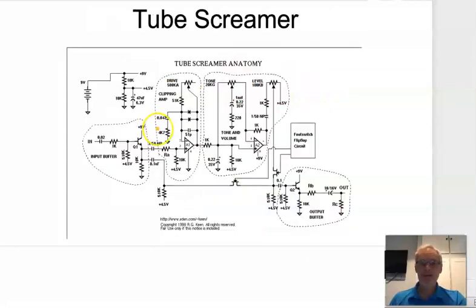This is the tube screamer arrangement. This here is the back-to-back diode arrangement, so this will help clamp this output signal at a particular level. As we change the gain of the amplifier here, we either bring in this circuit to start clipping or not.